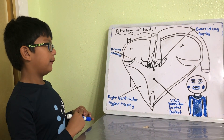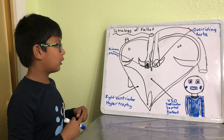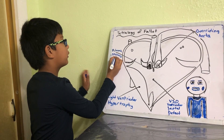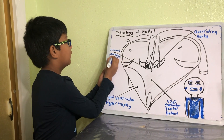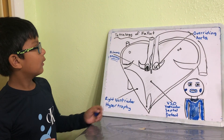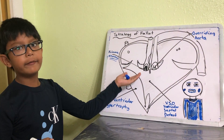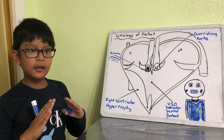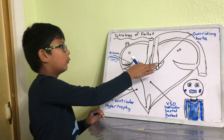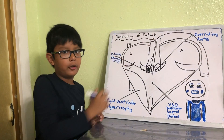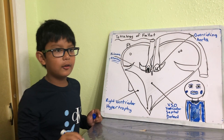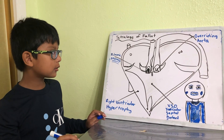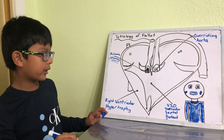One of the first defects is called pulmonic stenosis. This is when the pulmonic valve gets clogged, so resistance builds up and there's not going to be a lot of blood flowing.